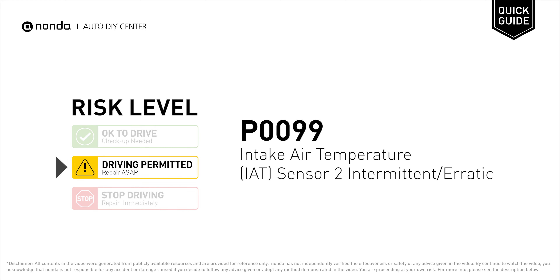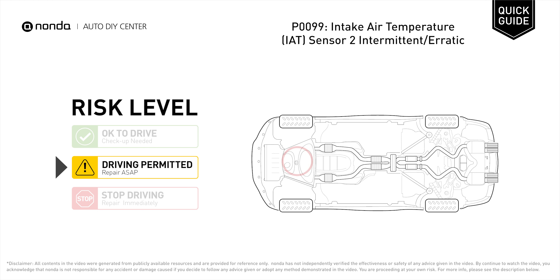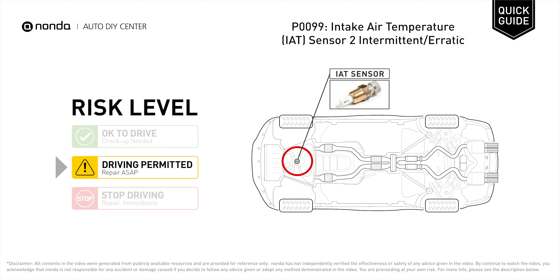P0099 is a diagnostic trouble code for Intake Air Temperature Sensor 2 Intermittent or Erratic. Under this circumstance, short distance driving is permitted, but your vehicle should be repaired ASAP. P0099 indicates that the powertrain control module has detected an intermittent input signal from the Intake Air Temperature Sensor 2 circuit.